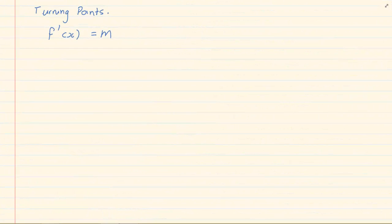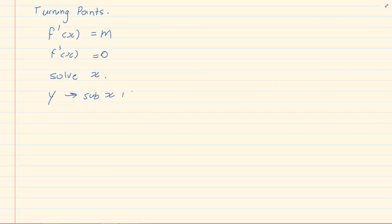So once we have calculated the gradient, we then make it equal to 0. Once you do that, you can solve for x. And if you have x, you know how to get y — substitute x into the original equation. Let us determine the turning points of a few graphs before we continue drawing complete graphs. We are going to do it step by step.